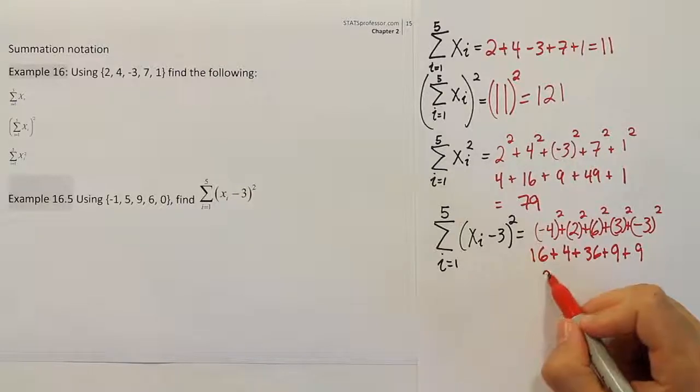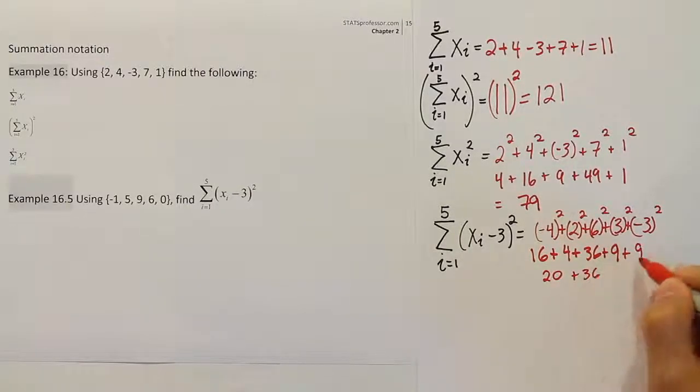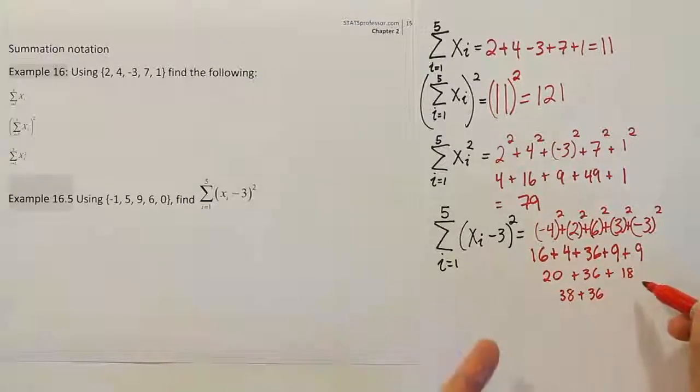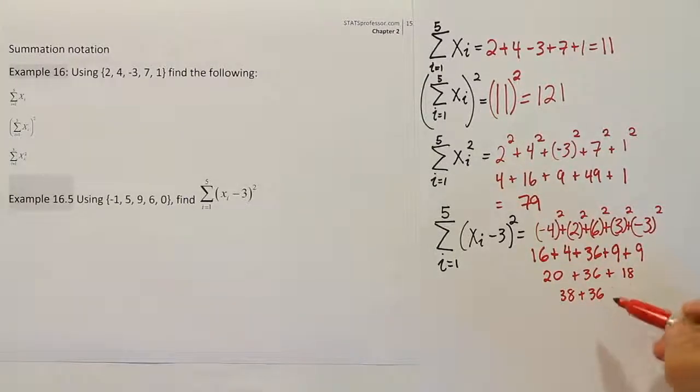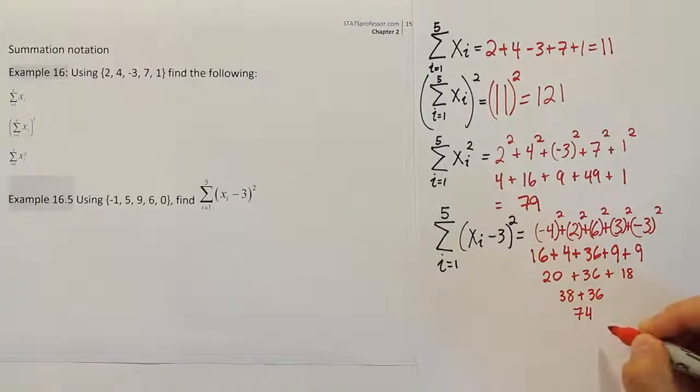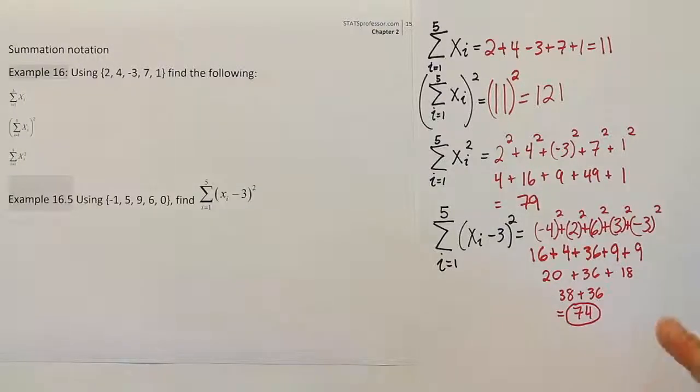And now that I've squared every value, I'm finally free to go ahead and add them together. And if I go to add them, 16 and 4 make 20. And then we have 36. And then we have 18. So we end up having 38 plus 36. I added the 18 and the 20, 38 and 36. And that will give you 74 when all is said and done. So 74 is our final answer for this sum, because 30 and 30 make 60 and 8 and 6 make 14. So 74 is your total sum. So that's the answer for the final ones.